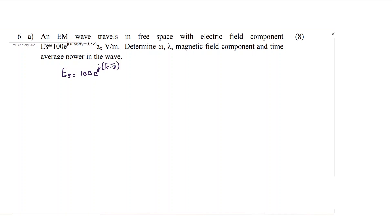k dot r into unit vector ax volt per meter. When the question is, Es is given like this, you should realize this is in this format.